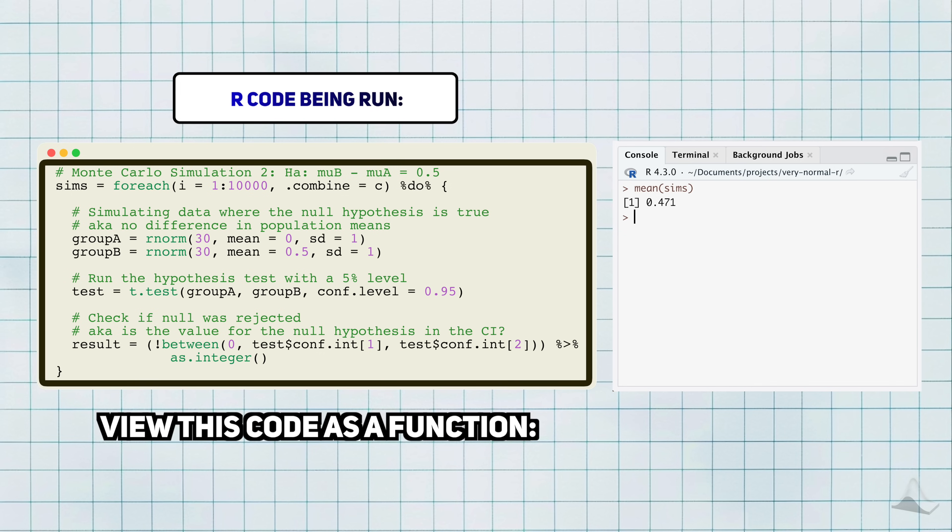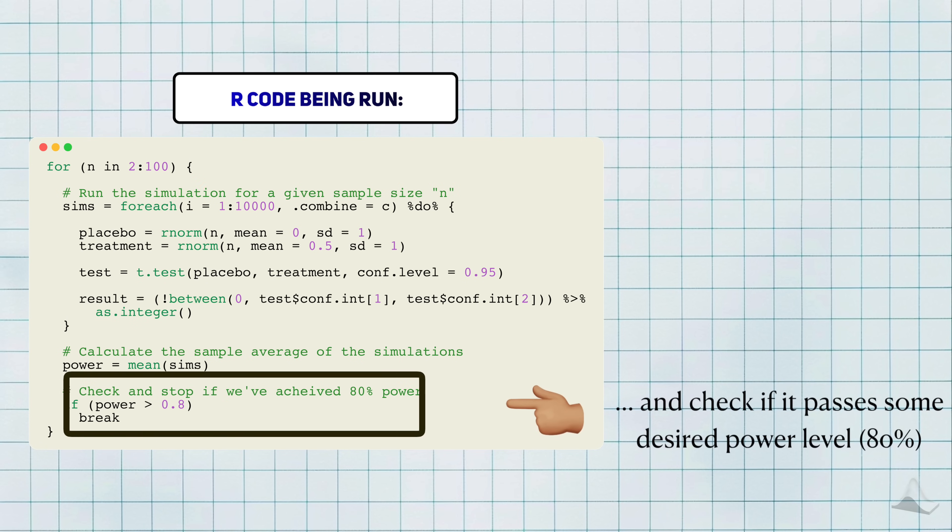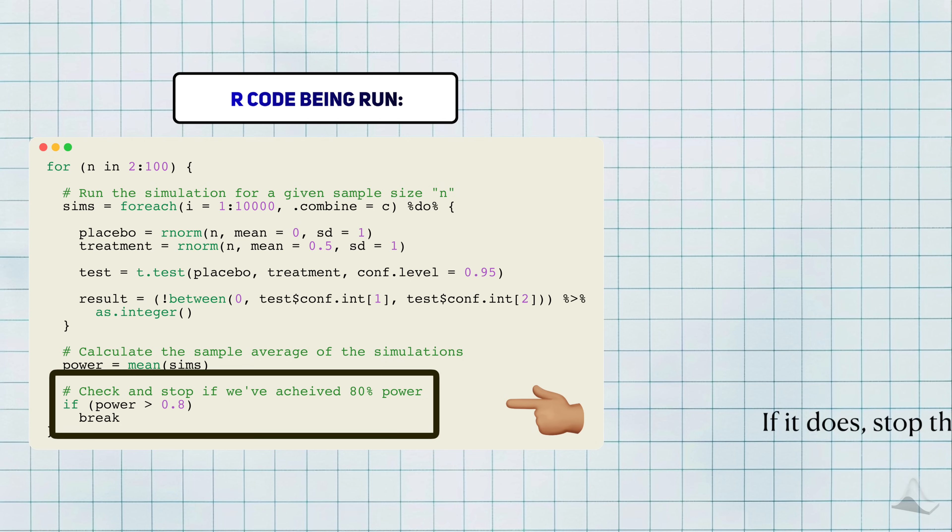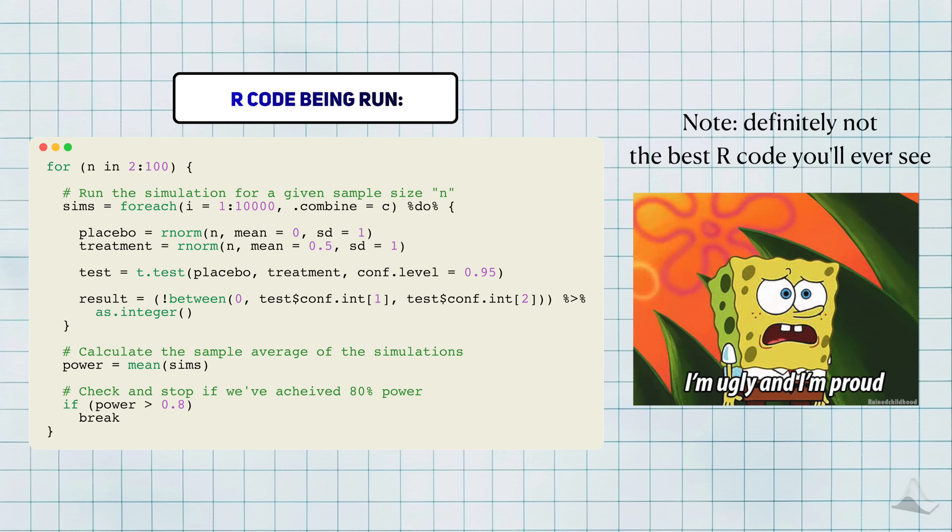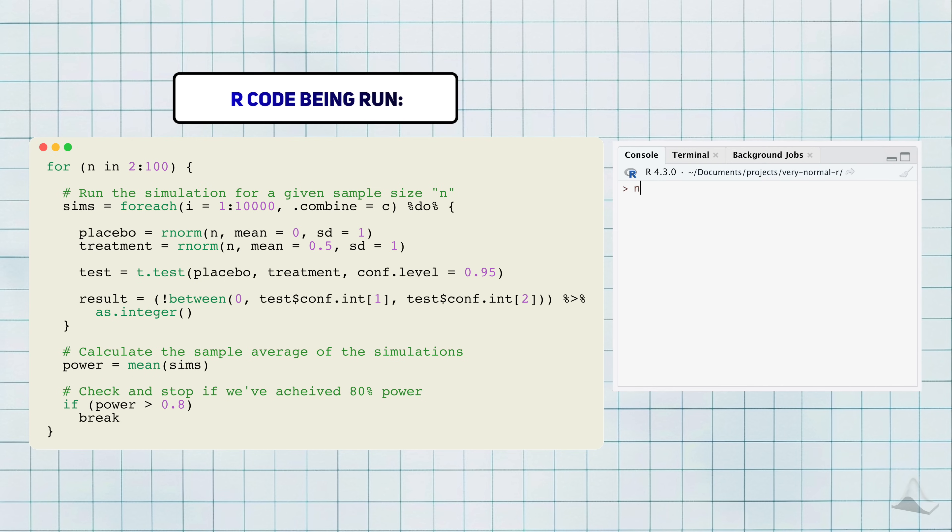I want you to view this entire piece of code as a function, where the input is the sample size and the output is power. What I'm going to do is iterate over different sample sizes. For each value, I'll calculate power and check if it reaches or passes 80%. Once it does, I can stop the loop and check what sample size was needed to achieve this. I'm not going to pretend this is the most optimized R code you'll ever see, but it does the job and it's easy to read. With the power of editing, I can show you the results immediately. The loop stops at a sample size of 64 people per group to achieve 80% power.